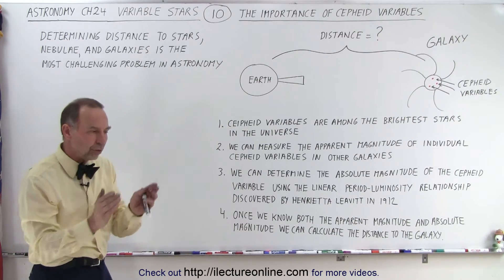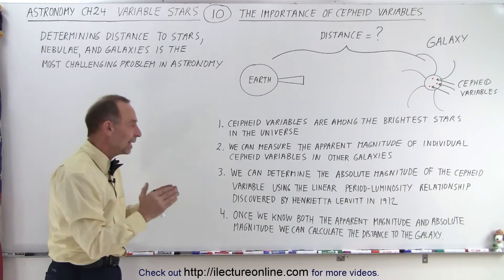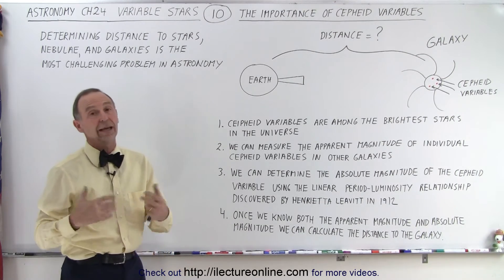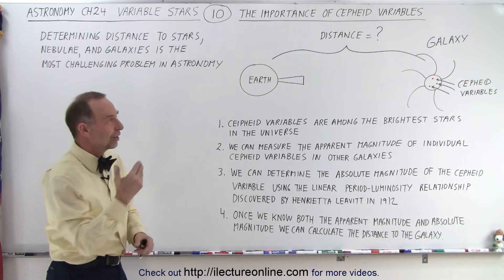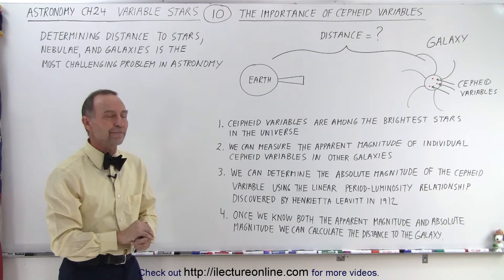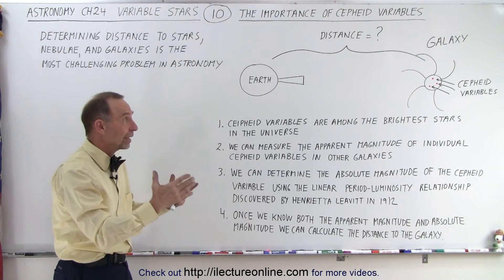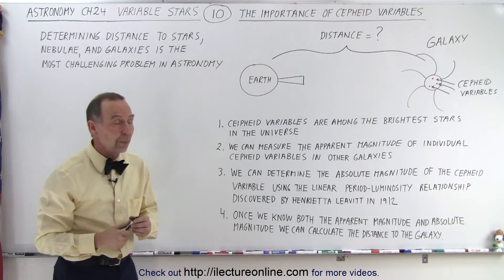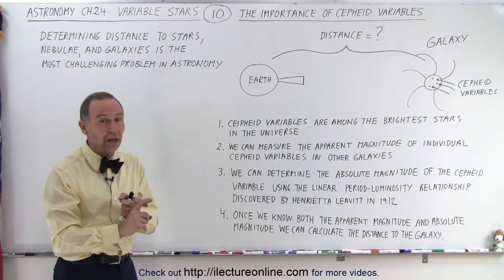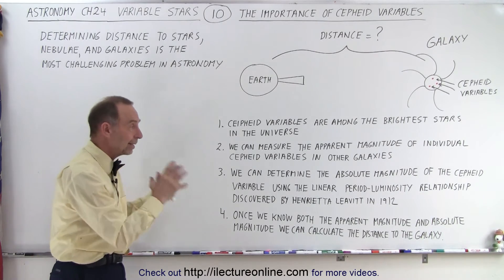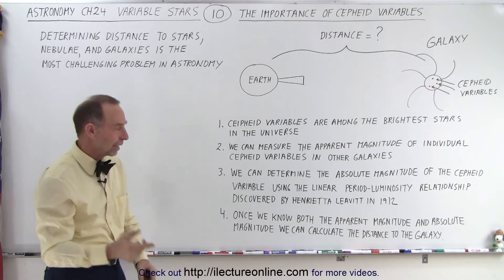Once we have both the apparent magnitude and the absolute magnitude, we're able to calculate the distance to that star. And, of course, if the star is inside a galaxy, then also the distance to the galaxy. This is how we're able to calculate distances to faraway galaxies and to stars in our own Milky Way, simply by measuring how bright a Cepheid variable appears, calculating its absolute brightness, and then comparing those two numbers to calculate the distance.